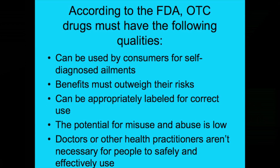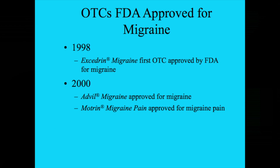Starting with over-the-counter drugs, there are some FDA-approved acute treatments for migraine. To get an OTC drug approved, the FDA requires that it can be used by consumers for self-diagnosed ailments, that benefits outweigh the risks, that it can be appropriately labeled for correct use, that the potential for misuse and abuse is low, and that physicians aren't necessary for safe and effective use. The OTC drugs approved for migraine in the United States include Excedrin Migraine, the first OTC drug approved by the FDA in 1998, and the ibuprofen brands Advil and Motrin, approved in 2000. Controlled trials demonstrated these medications were safe and effective for migraine.